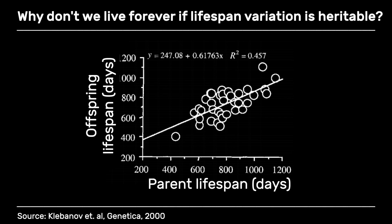So why is that? If we think of the postulates of natural selection, we know there is variation between individuals — different individuals survive for different amounts of time, even within the same species. We also know this variation is heritable. Here we have a graph showing the survival of offspring of a lab mouse correlated with the survival of the parents, and you can see the line has an inclination indicating that lifespan is heritable. So if there is variation, and this variation is heritable, and living longer is beneficial for fitness, why doesn't natural selection increase longevity across all species?